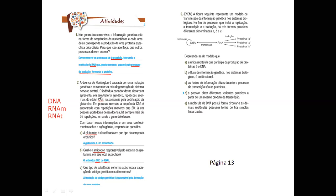Se ele pedisse o DNA correspondente, seria G-T-C. Então, a partir de um eu posso encontrar a sequência dos outros. E a questão C pergunta: que tipo de substância se forma após toda a tradução do código genético nos ribossomos? Se ele tá falando de tradução, vai formar uma proteína.